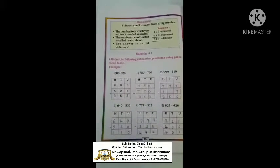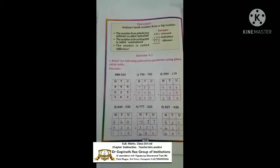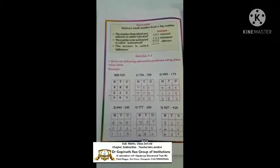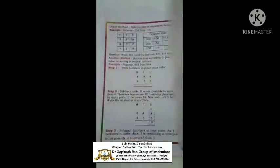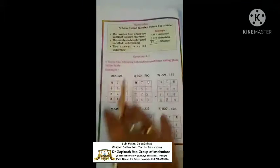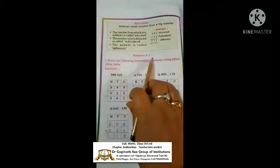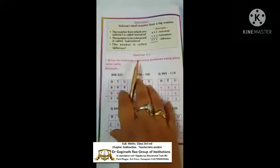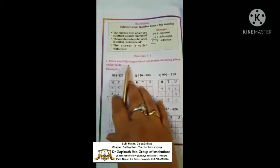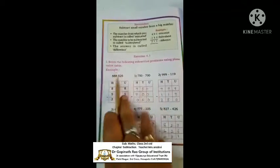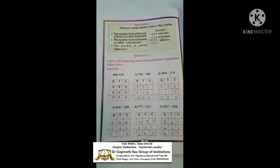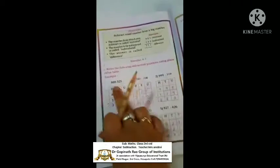Hi children, welcome to math class. This is a continuation of the last class — we have finished till page number 113. We start with Exercise 4.1: solve the following subtraction problems using a place value table. Place value table means we have to draw a table of hundreds, tens, and units.